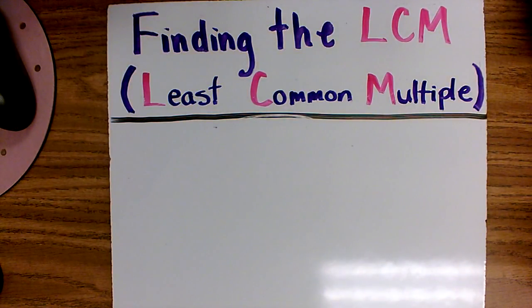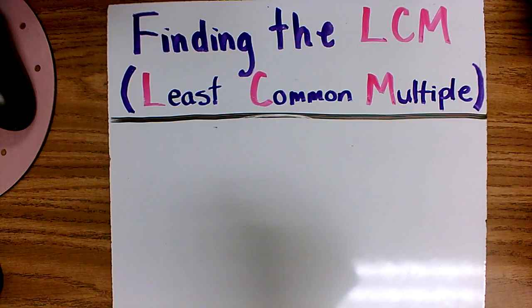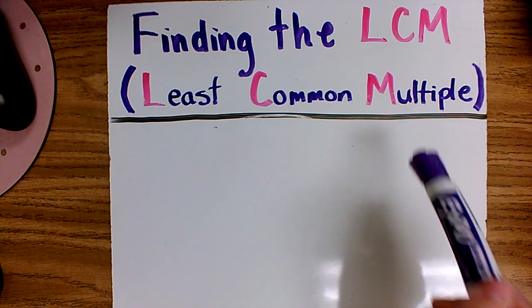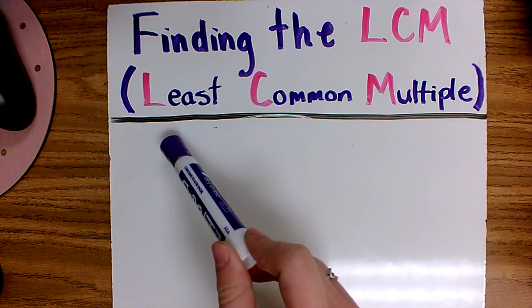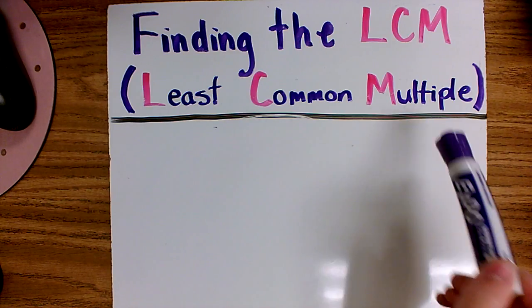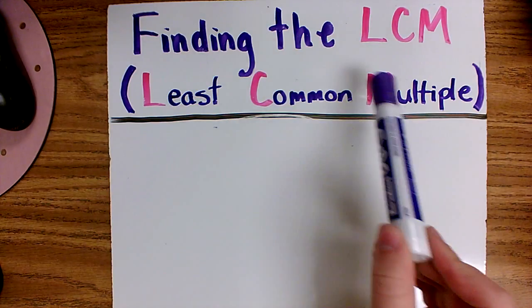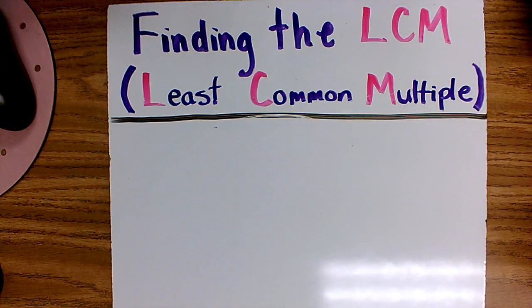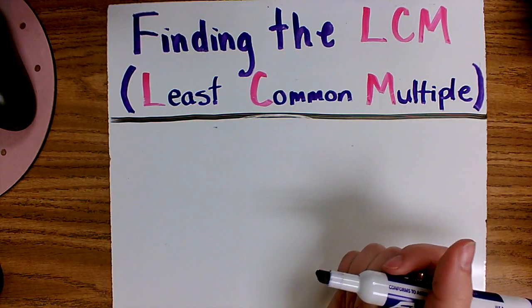This video is going to review finding the LCM or the least common multiple. The least common multiple is the smallest multiple that two or more numbers share or have in common. Let's try it out with the numbers 3 and 6.